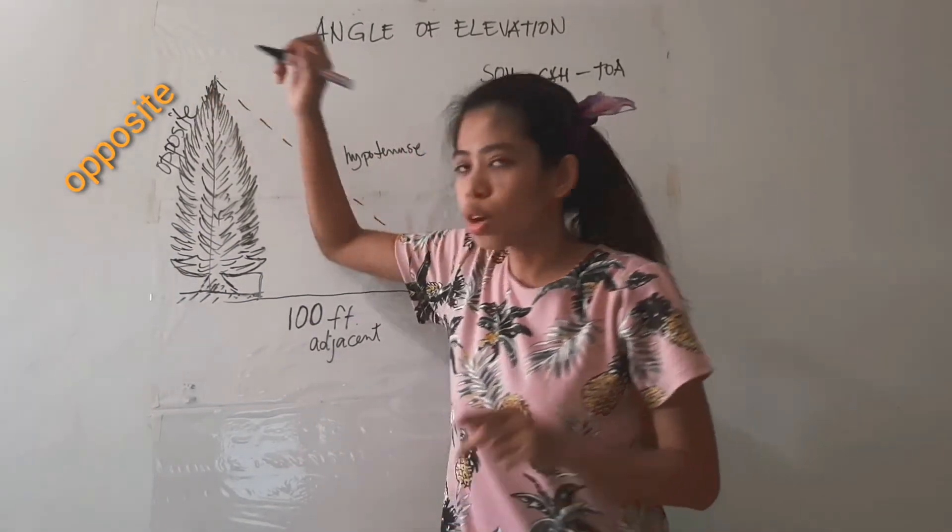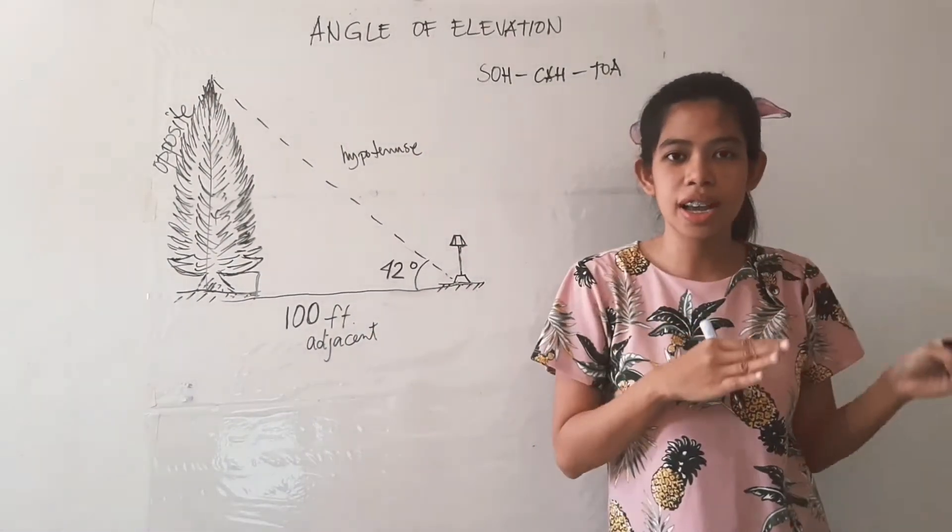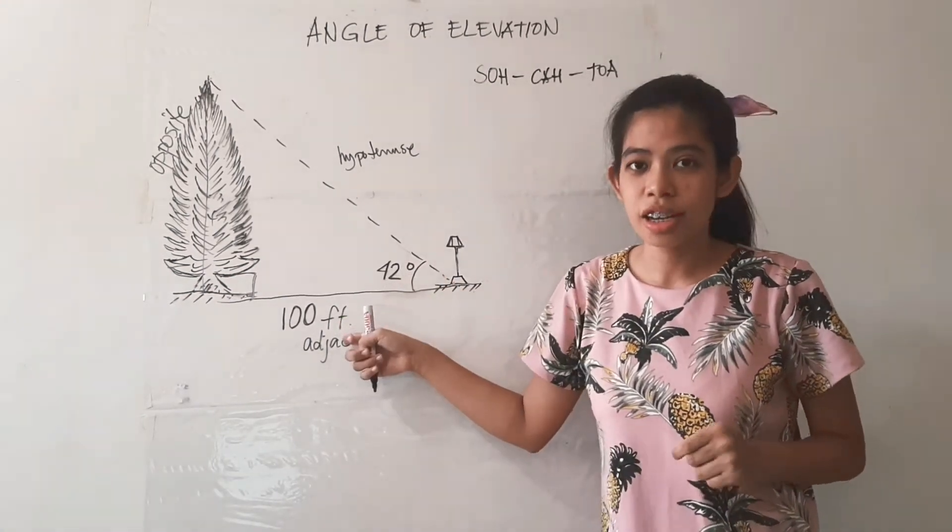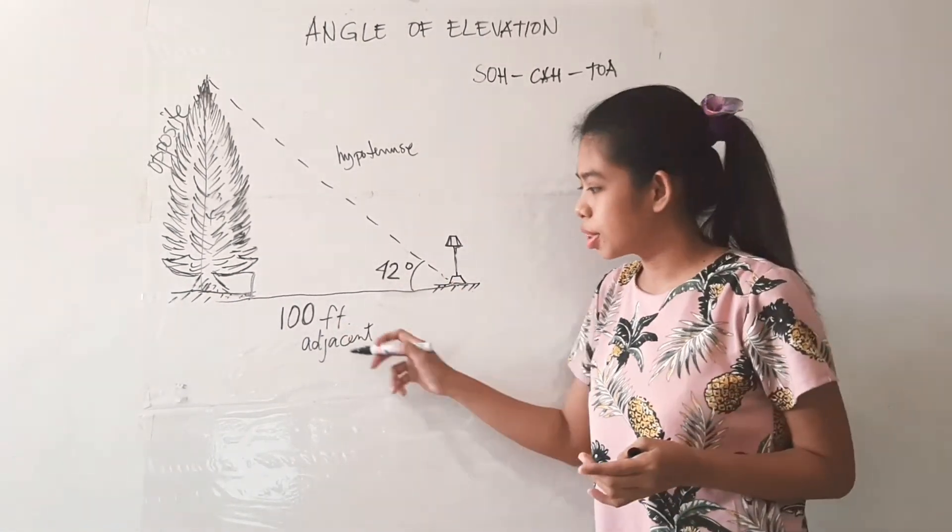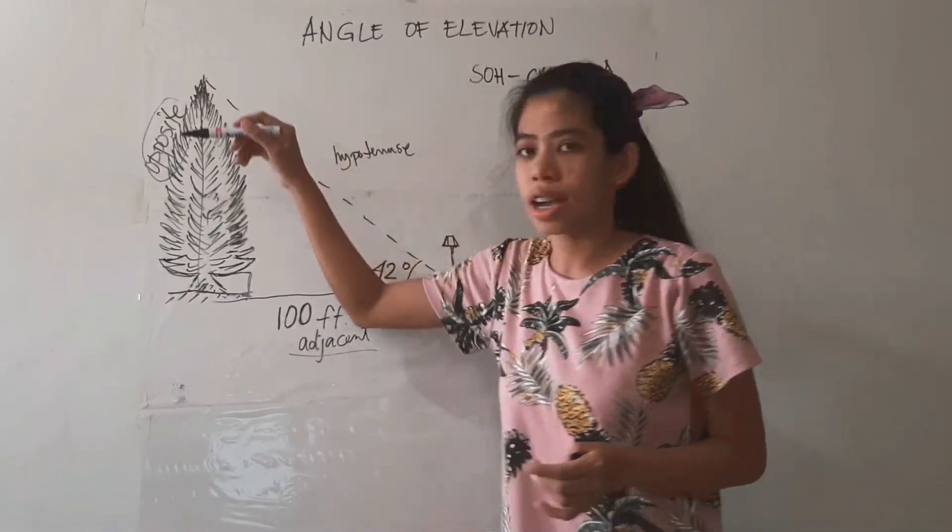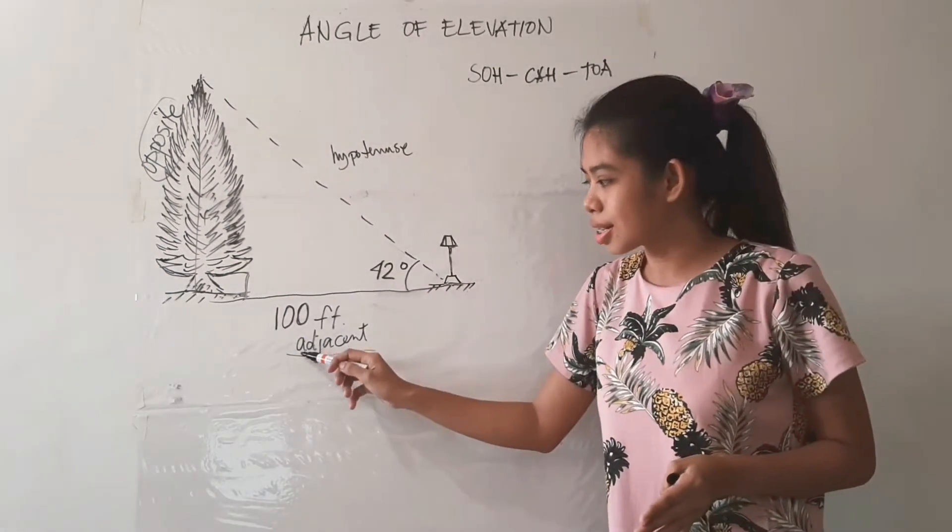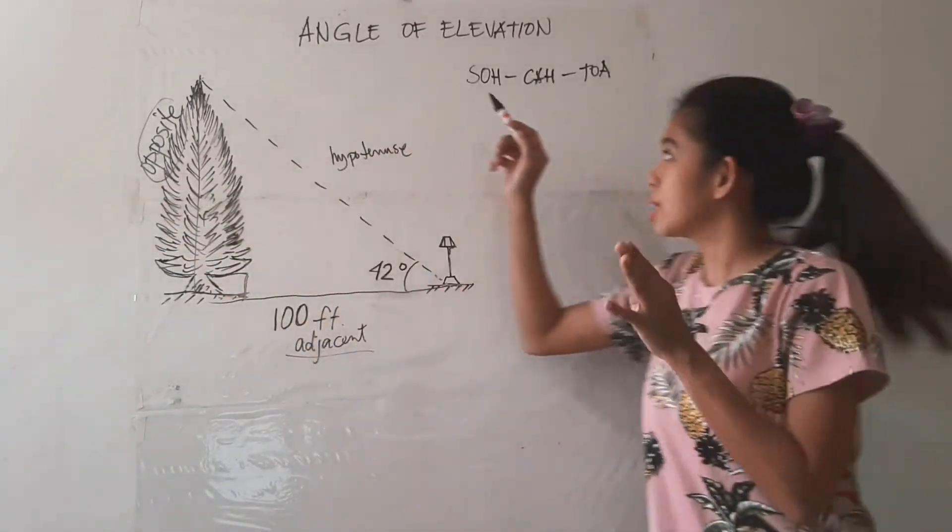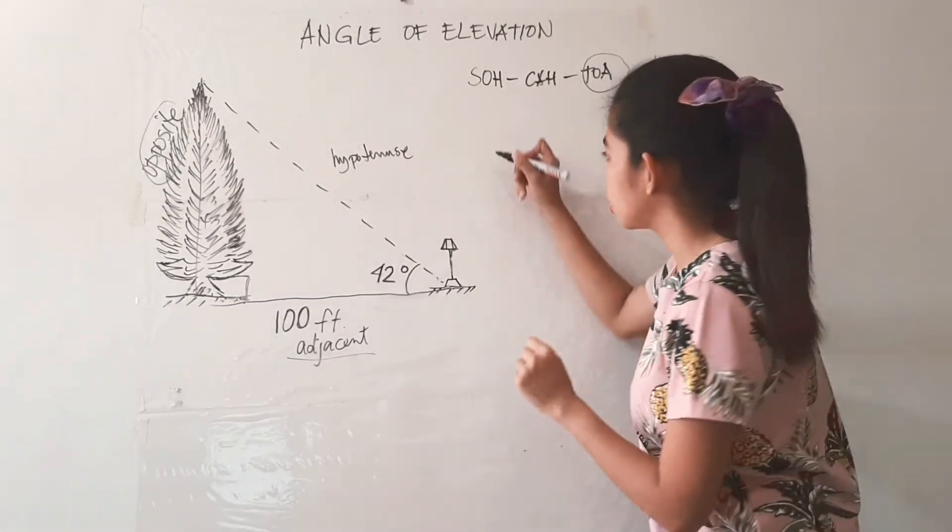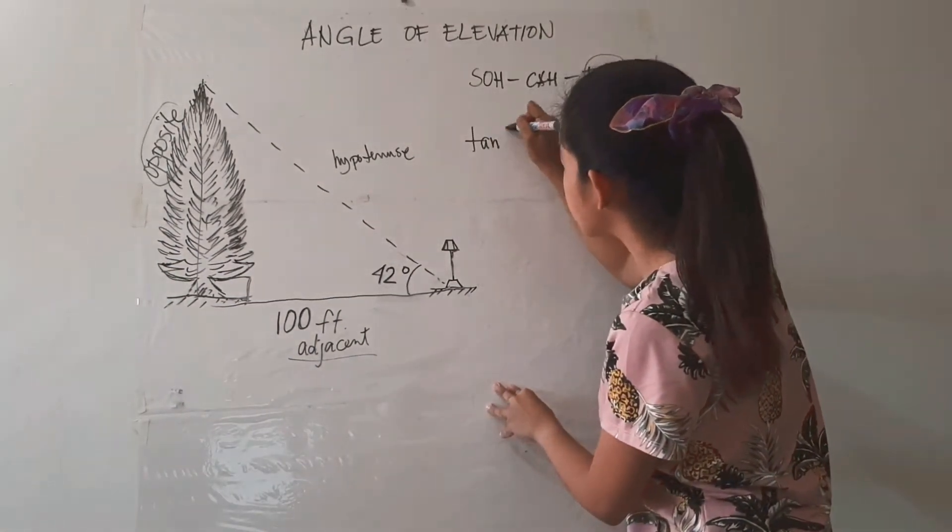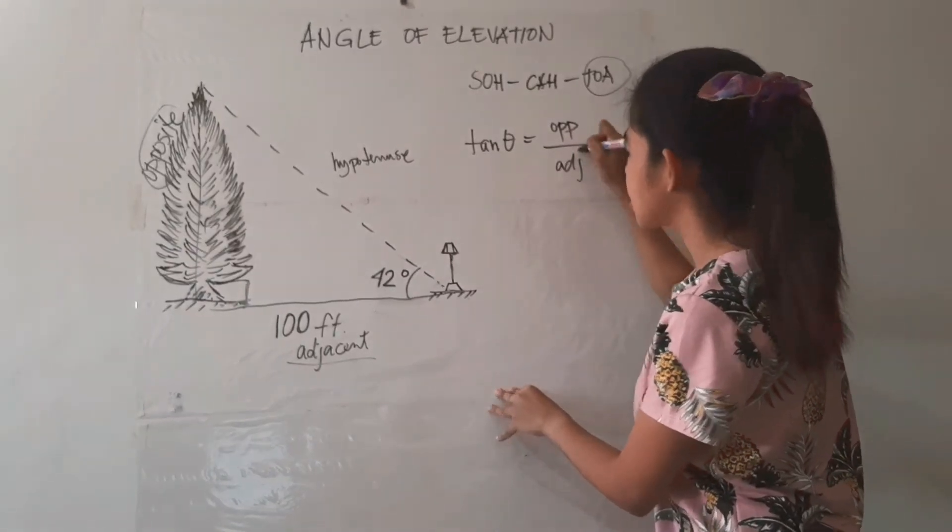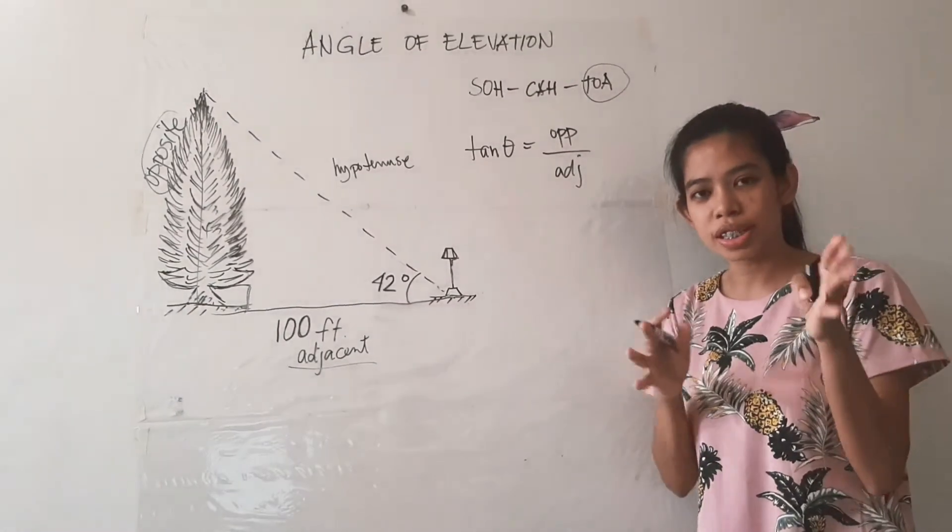Opposite side. So applying solving right triangles, given the measure of one angle and one side, we may now proceed. So given the adjacent side, which is 100 feet, and we are looking for the opposite side, which is the height of the tree, so that's A and O, we can simply say that we are going to use TOA. So again, TOA means tangent theta equals opposite over the adjacent side. So I hope you can still remember the concept.